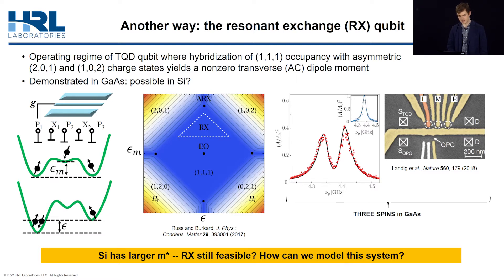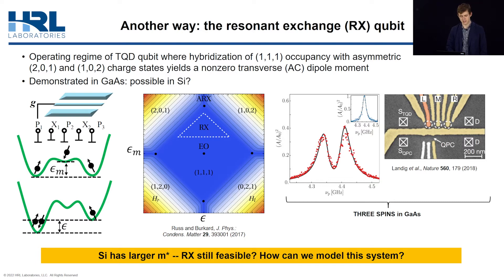The vertical axis, epsilon_m, is the dimple detuning — how P2 bias compares to the average of P1 and P3 bias. Rx spin-photon coupling has been demonstrated experimentally in 3-5 materials — see this paper from Zurich in 2018 in gallium arsenide. Here again, you can see the vacuum Rabi mode splitting, which is indicative of strong spin-photon coupling.